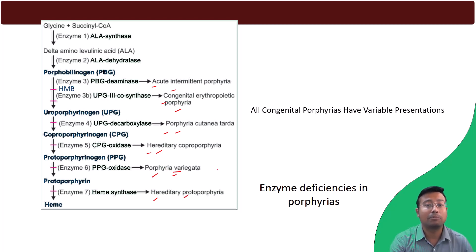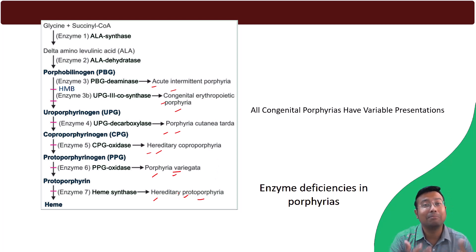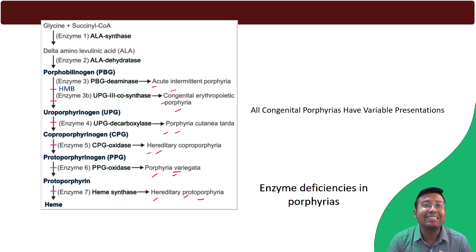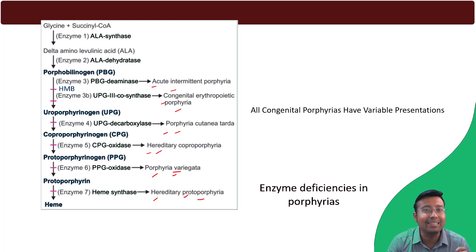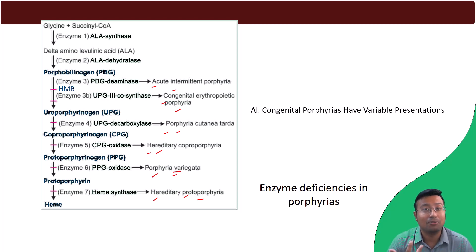Note that Hereditary Protoporphyria is also simply known as Protoporphyria. I hope these three mnemonics have really helped you to remember the heme synthesis sequence, so you can answer all multiple choice questions easily in any type of examination. If you like this video, please hit the thumbs up and share it with your friends in medical science who are preparing for exams.